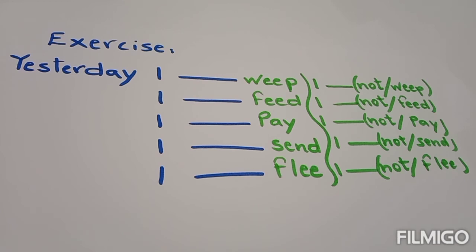Exercise. Yesterday, I weep. Negative, I not weep. Yesterday, I feed. Negative, I not feed. Yesterday, I pay, I not pay. Yesterday, I send, I not send. Yesterday, I flee, I not flee. Conjugate in the past simple, positive form and negative form.